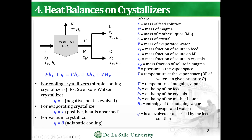So what are the letters in here? You already know F, M, L, C, V, and all the rest. But now we have what you call the pressure — so there is a pressure term involved and temperature. So T prime would be the temperature of the outgoing vapor, and the temperature of the outgoing vapor would be the same as the temperature of the magma. And then you would have the enthalpy of the feed, the enthalpy of the mother liquor, the enthalpy of the crystals, and the enthalpy of the outgoing vapor.